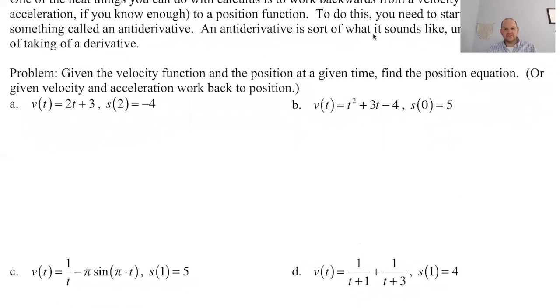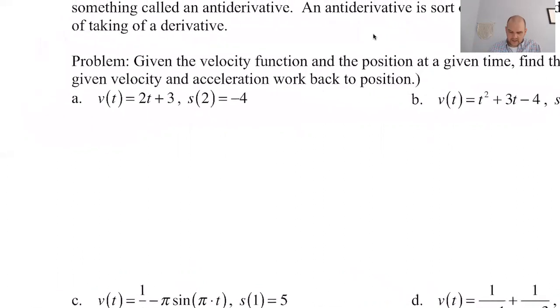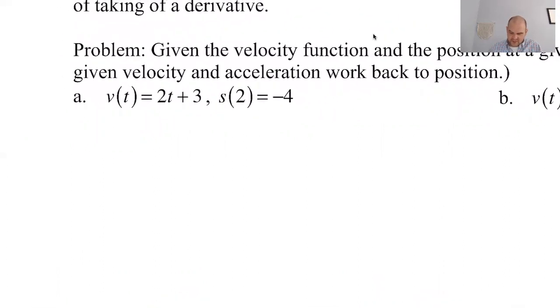So given the velocity function and the position at a given time, find a position equation. Or we might be given velocity acceleration and have to work back to position. So let's see if we can do this. A lot of this is just kind of asking yourself, what would I take the derivative of to get this? Velocity is the derivative of position. So if my velocity is 2t plus 3, then I think my position should be, I'm going to call it s of t. What do you take the derivative of to get 2t? This looks like a power rule type thing. You would have brought the exponent down, subtracted 1. So maybe what we need to do is add 1 to the exponent and multiply by the reciprocal. That's a weird idea.